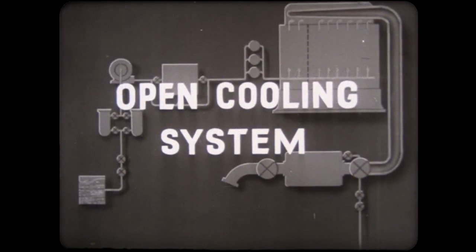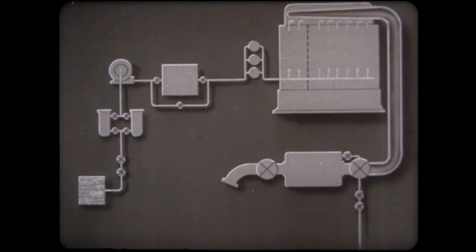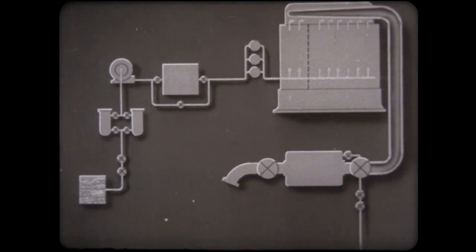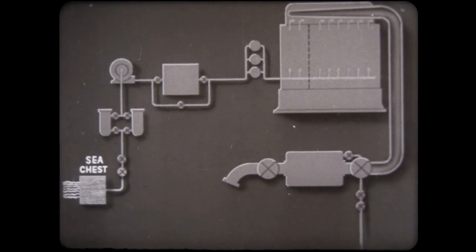In one type of cooling system, called the open system, seawater is circulated through the engine. Entering the system through a strainer in the sea chest, it passes through a sea valve and a stop valve to a twin strainer.